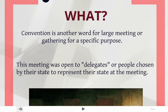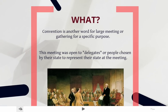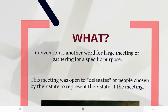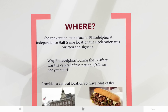This is a picture of the Constitutional Convention, also known as the Grand Convention or the Philadelphia Convention — it has three names, but they all refer to the same thing. In this picture you see all the delegates in the room. They were there for about four months, and they talked and wrote the Constitution.